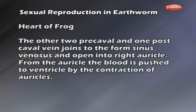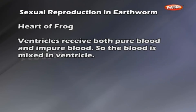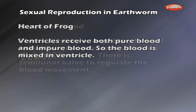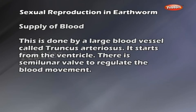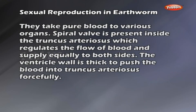From the auricles, blood is pushed to the ventricle by auricular contraction. The ventricle receives both pure and impure blood, so the blood is mixed. Blood supply is carried out by a large blood vessel called the truncus arteriosus, which starts from the ventricle. A semi-lunar valve regulates blood movement. The truncus arteriosus splits into two branches forming many arteries. A spiral valve inside the truncus arteriosus regulates blood flow equally to both sides. The ventricle wall is thick to push blood into the truncus arteriosus forcefully.